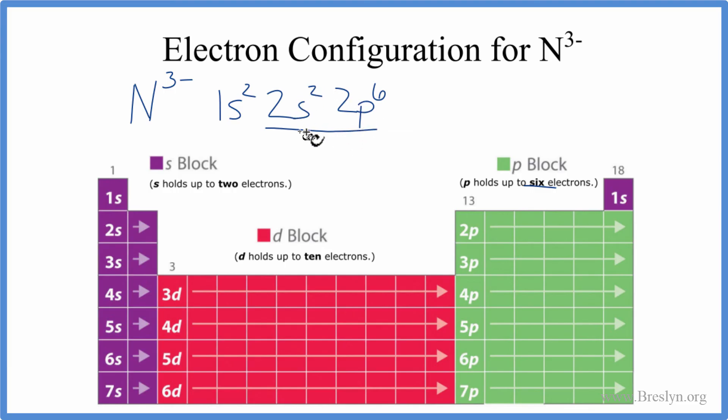So when nitrogen forms ionic bonds, it'll gain three electrons in order to have this configuration here. This is Dr. B with the electron configuration for N3-, the nitride ion. Thanks for watching.